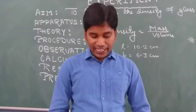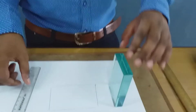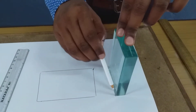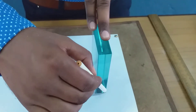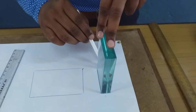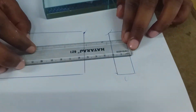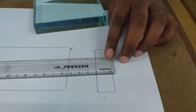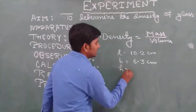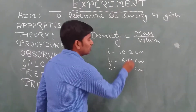To find the height, we keep the glass slab on its side and draw its outline in that orientation. We then measure this distance, which gives the height. The height is 1.9 centimeters. This measurement should also be done two or three times and then averaged.